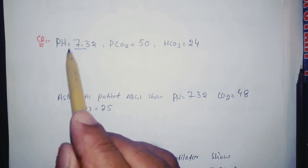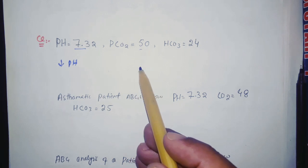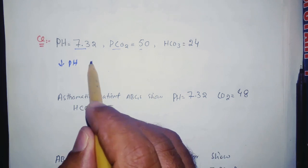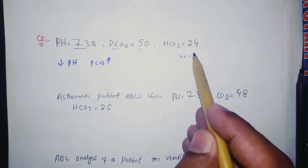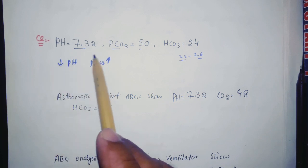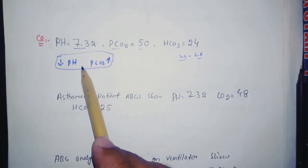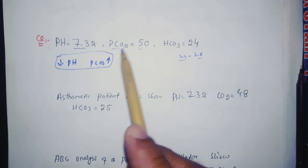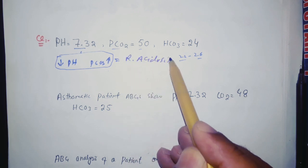Practice question: The pH is decreased. PCO2 is high (normal is 35–45). HCO3 is normal (22–26). Since pH and CO2 go in opposite directions, this indicates a respiratory problem. CO2 is increased (acidic) and pH is decreased, so this is respiratory acidosis.